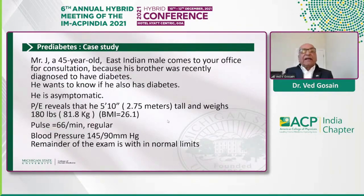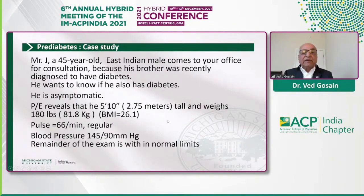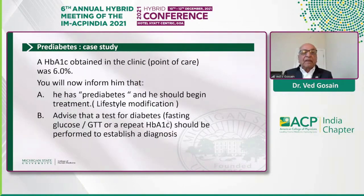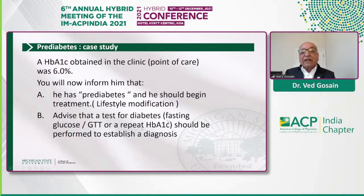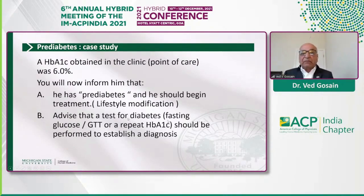Let me present a case. This is a 45-year-old East Indian male who comes to your office because his brother was recently diagnosed with diabetes and he wants to know if he also has it. He's 5'10", 180 pounds, BMI 26.1, pulse 66, blood pressure slightly elevated, and the rest of the exam is normal. A point-of-care hemoglobin A1C was 6%. Should you inform him he has prediabetes and begin lifestyle modification, or advise that a fasting glucose, glucose tolerance test, or repeat hemoglobin A1C should be performed to establish a diagnosis?